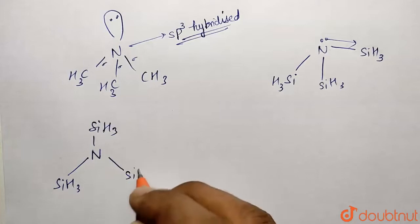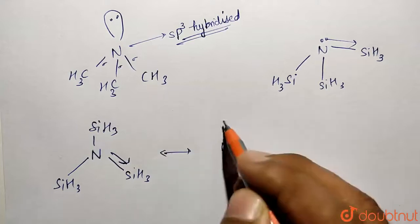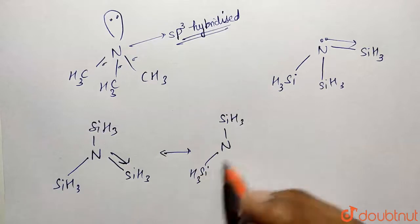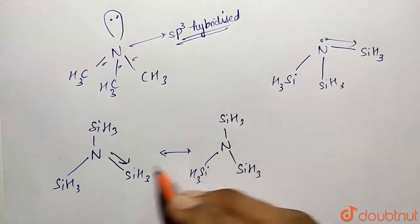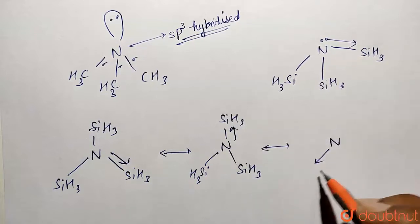So this side bond will be shown like this with back bonding, and it can also be shown like nitrogen, SiH3, and you can also show one time over here back bonding, and one time it will be shown over here.